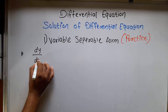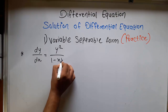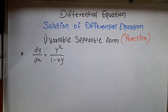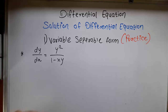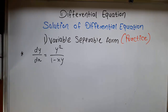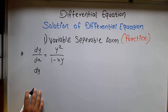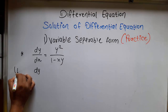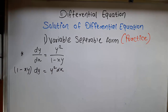Next problem: dy/dx equal to y squared times (1 minus x squared). In this problem, we have x and y terms, and we try to make it in variable separable form. So we transfer y squared to this side. It comes: (1 minus x) dy equal to y squared dx. We make dx and dy separate.